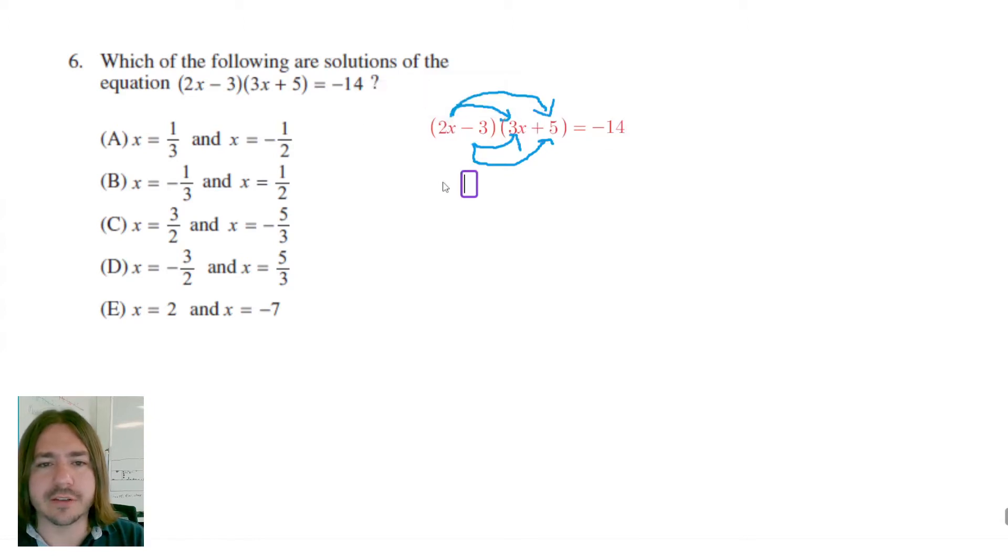So 2x times 3x is going to give me 6x squared. And then 2x times 5 will be 10x. Negative 3 times 3x will be negative 9x. And finally, negative 3 times positive 5 will be negative 15 equals negative 14.